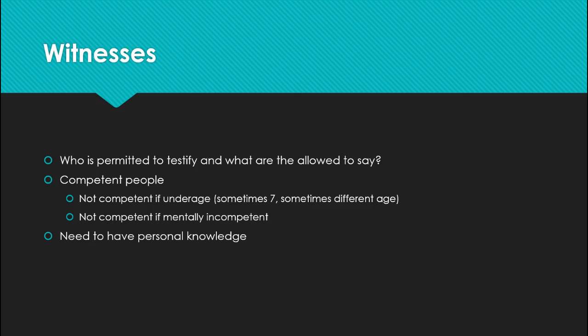Let's talk about witnesses — who's allowed to come to court and what are they allowed to say? We need to have what's known as a competent person to testify. Typically this is usually an adult. Sometimes kids — minors typically under the age of 18 — can be allowed to testify, but kids under seven will almost never be allowed to testify because their testimony is not always considered reliable. There are obviously exceptions, like a child molestation case, but typically we don't have young witnesses.